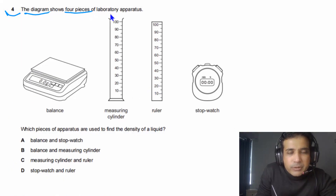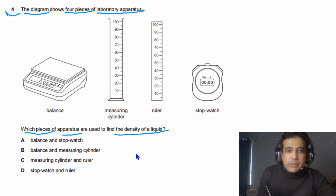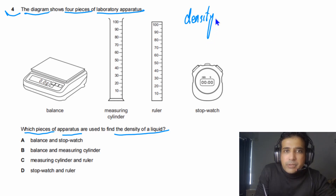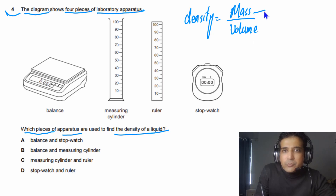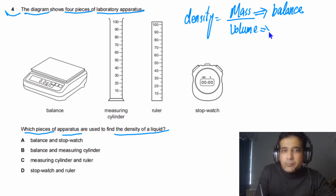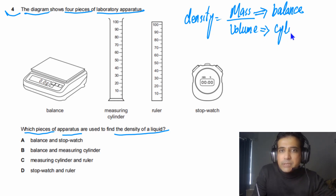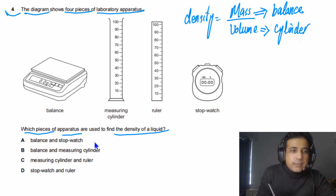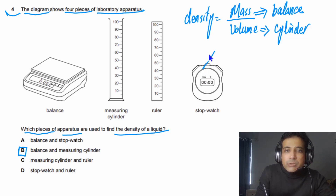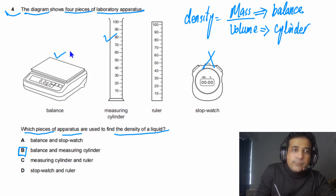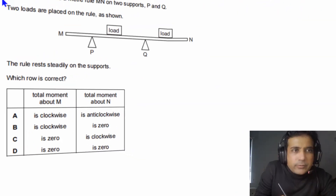For Question 4, we need to find which pieces of apparatus determine the density of a liquid. Density equals mass over volume. To find mass we need a balance, and to find volume of a liquid we need a measuring cylinder. We don't need a stopwatch. The answer for Question 4 is B.